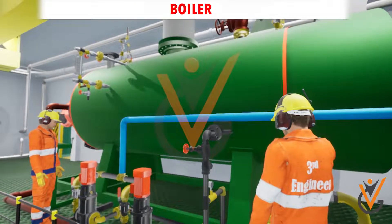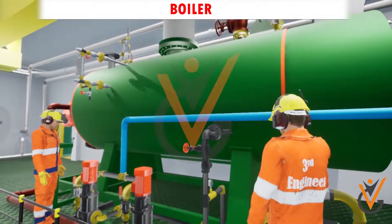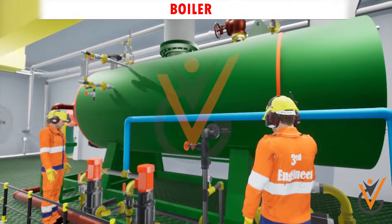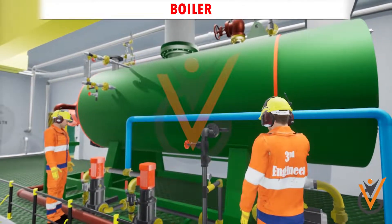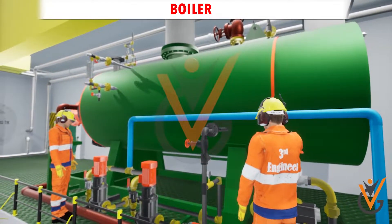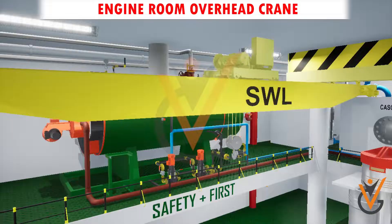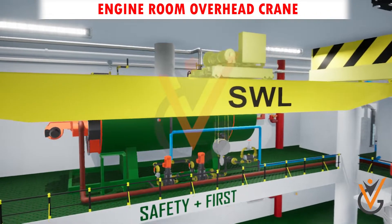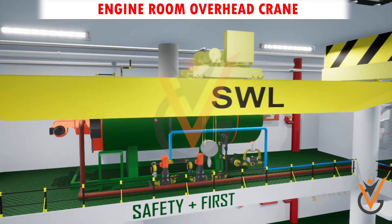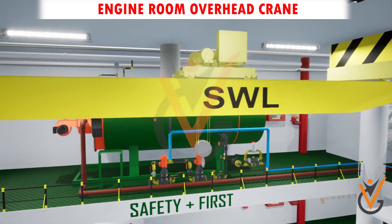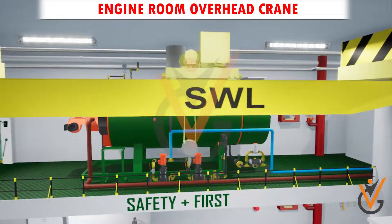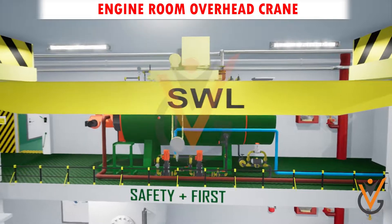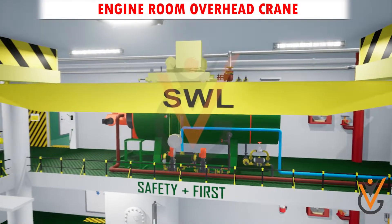The auxiliary machinery boiler is a steel pressure vessel in which water under pressure is converted into steam by the application of combustion. The engine room overhead crane is fitted on merchant vessels mainly as per the main engine specification, so that the crane can lift all individual parts of the engine during routine maintenance.